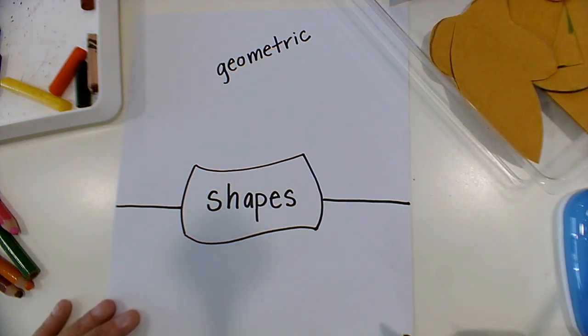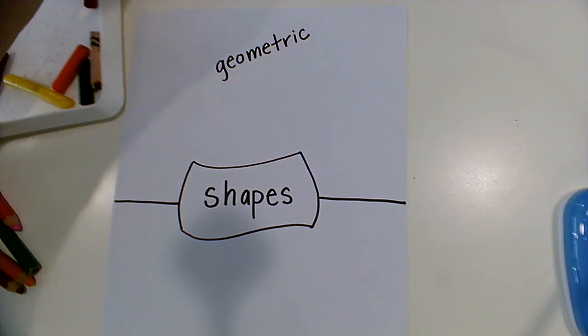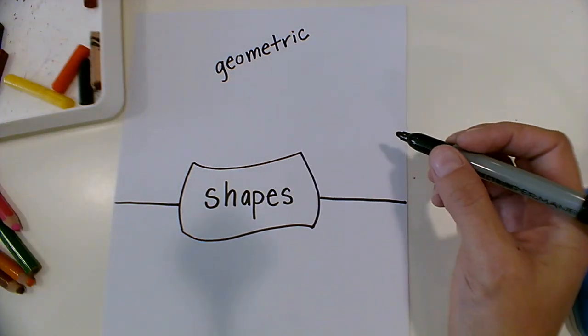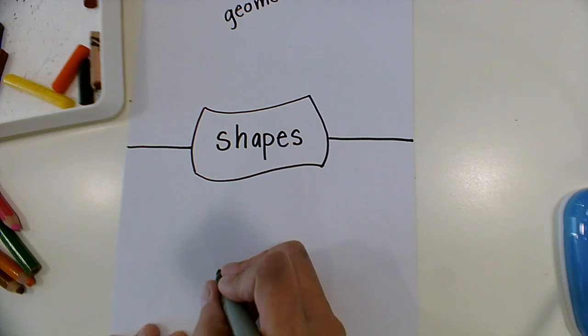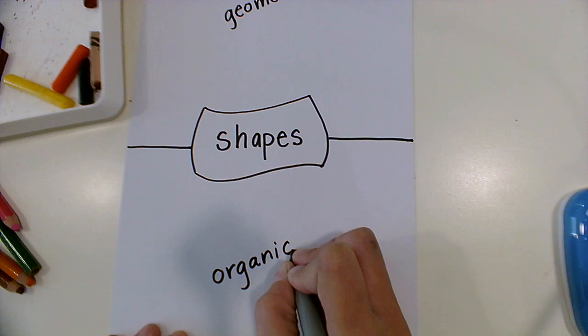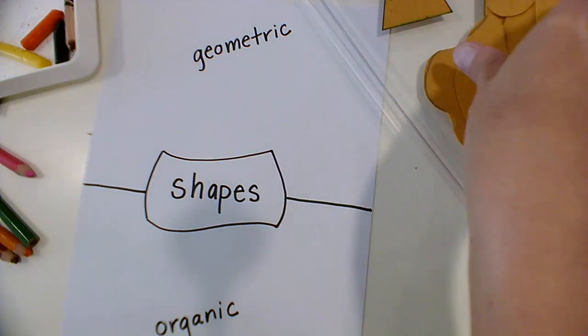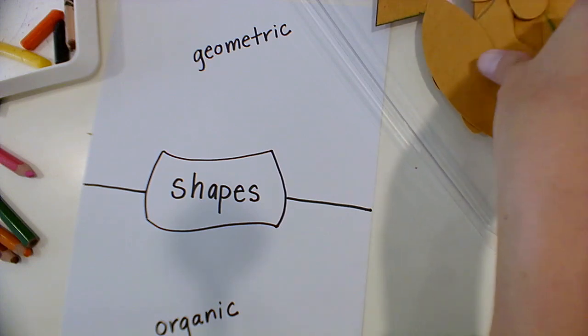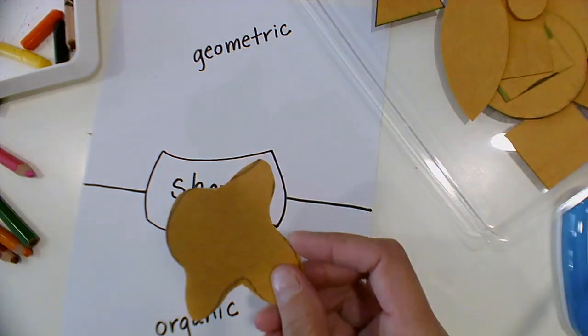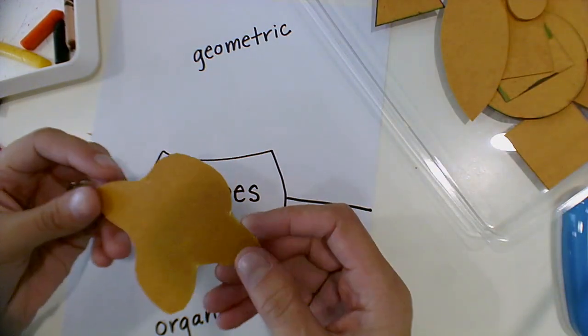The other kind of shapes are organic shapes, so I'm going to write 'organic' on the bottom. Then I can pick up my shapes. Geometric shapes are ones that we learn about usually in math class.